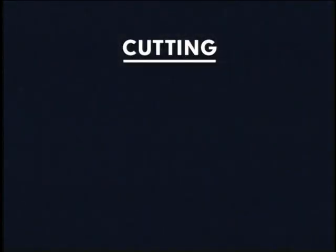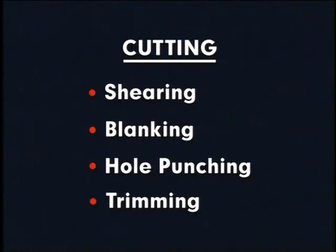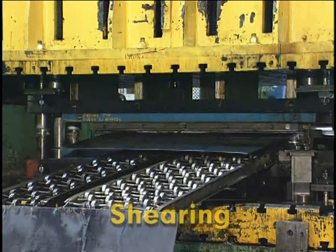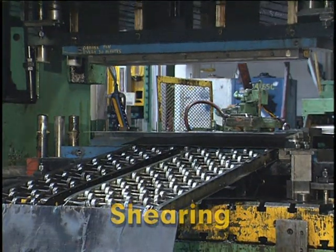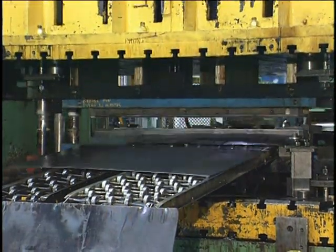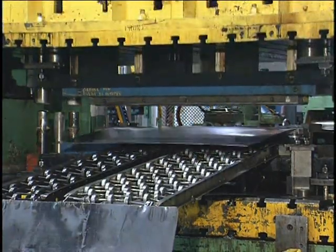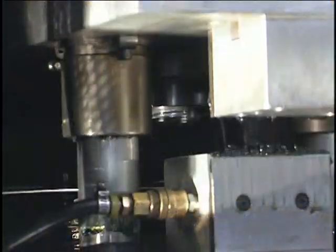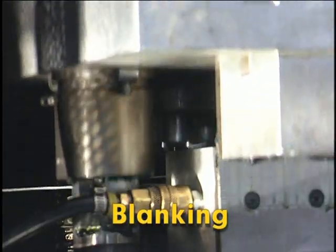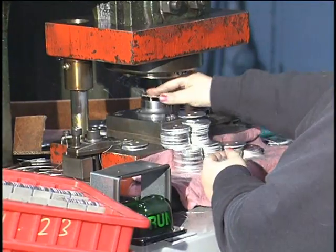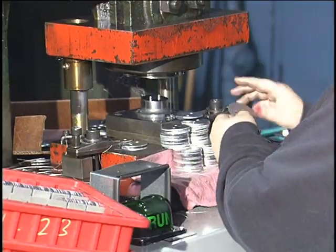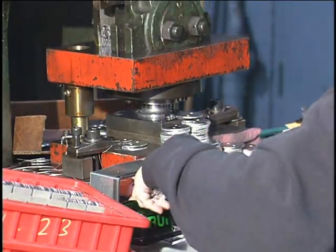Cutting, which includes shearing, blanking, hole punching, and trimming, is the most common press working operation using dies. Shearing is a process by which large sheets of material are cut into smaller sections; these pieces are generally used in later operations. Blanking is a form of shearing that cuts sheet metal stock around the complete perimeter of a shape to form a workpiece blank. Reference to a blank in stamping usually implies the need to perform subsequent operations to the workpiece.